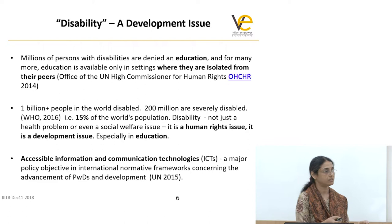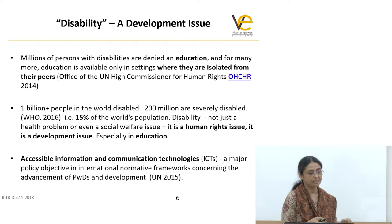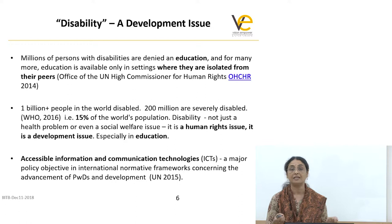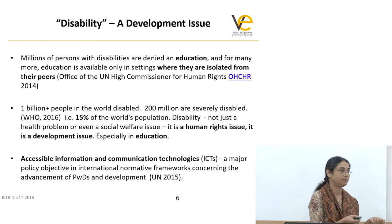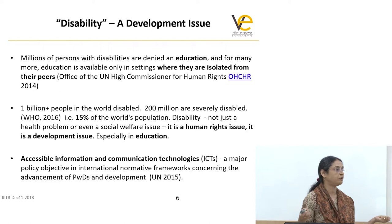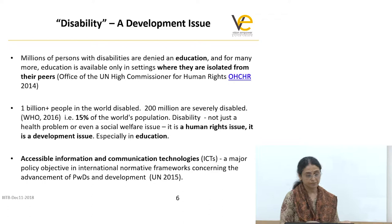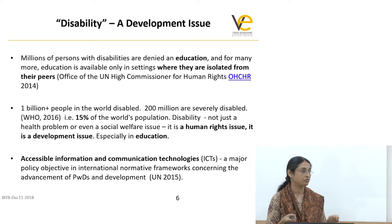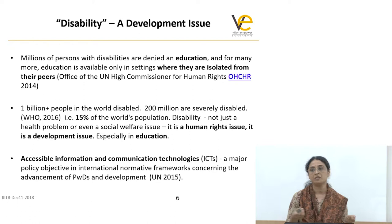It began to dawn on people that it would not be possible to solve the problem just by creating technologies or addressing a particular section of people. By 2014, the United Nations came out with a statement saying millions of people with disabilities are denied education, and education is available only in isolation. This is when people recognized there's a huge number under the disability umbrella — roughly 15 percent of the world's population — and it became not just a social welfare problem but a humanitarian and development issue.